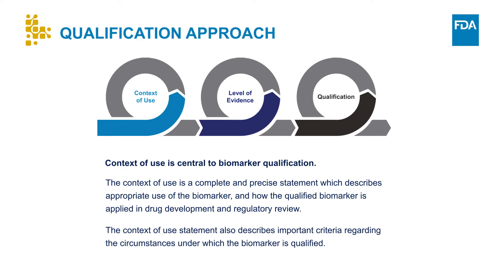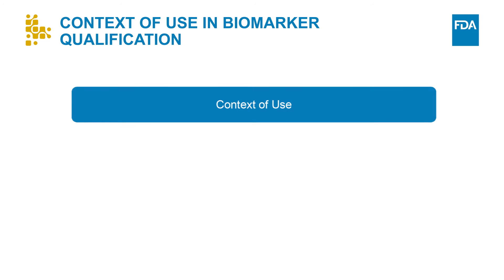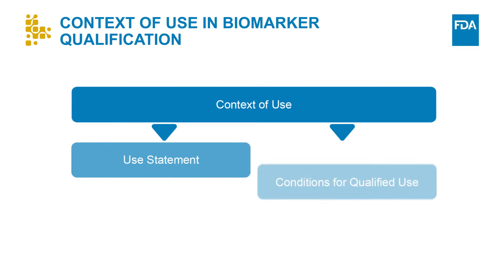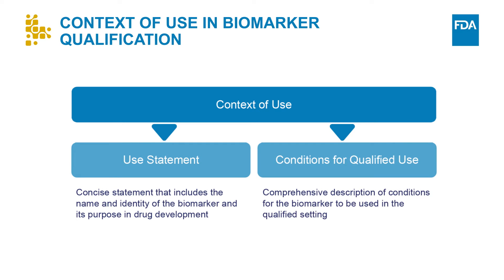The context of use statement also describes important criteria regarding the circumstances under which the biomarker is qualified. An appropriately constructed context of use consists of two main parts: the use statement and the conditions for qualified use. The use statement should be concise and include the name and identity of the biomarker and its purpose in drug development. The conditions for qualified use is a comprehensive description of conditions for the biomarker to be used in the qualified setting.